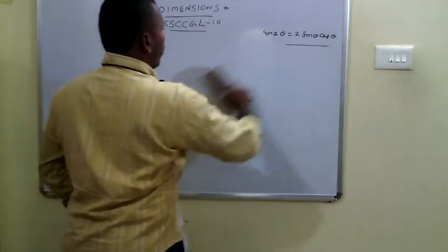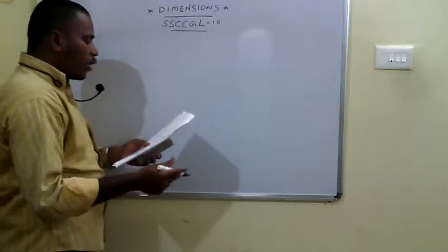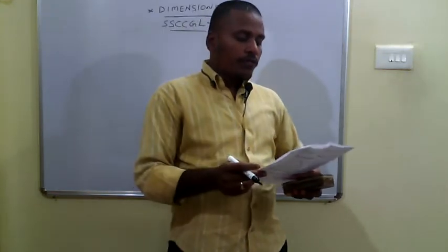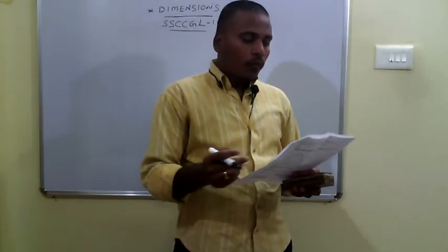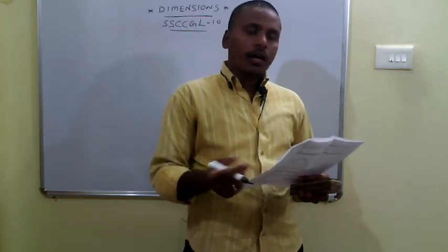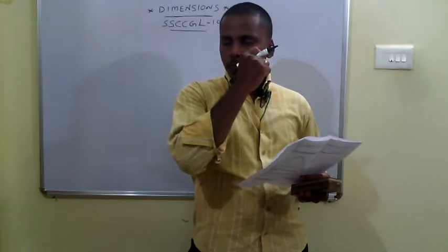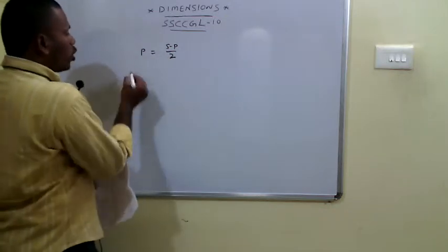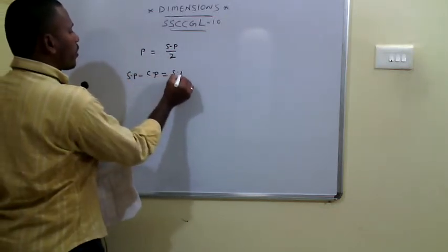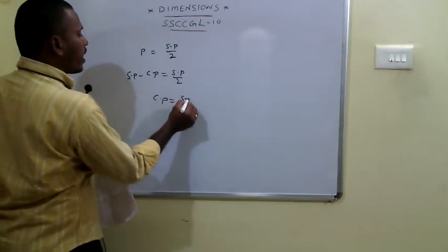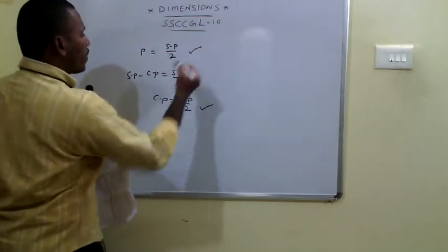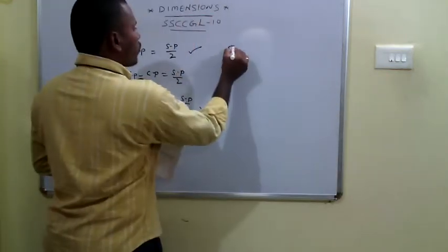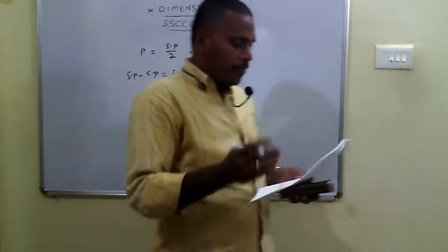The 63rd problem: profit is 50% of the selling price. Since profit = SP − CP = SP/2, we get CP = SP/2. Profit is SP/2 and cost price is also SP/2, so the actual profit percentage on cost price is (profit/CP) × 100 = 100%.